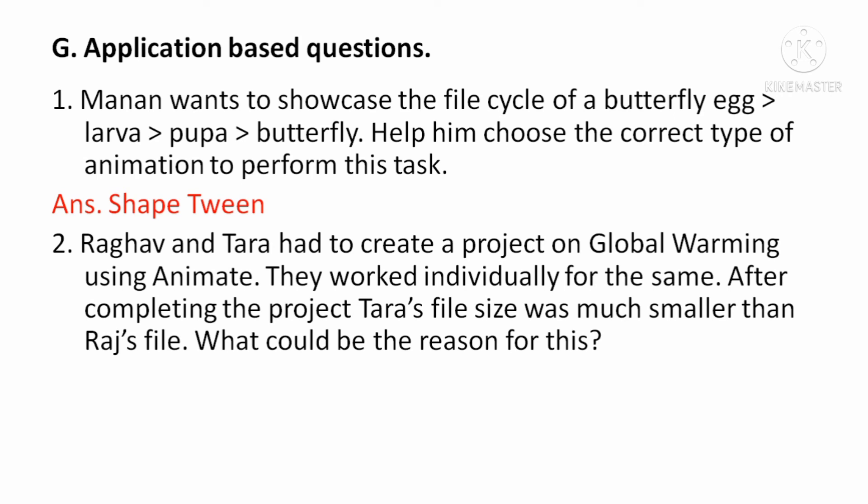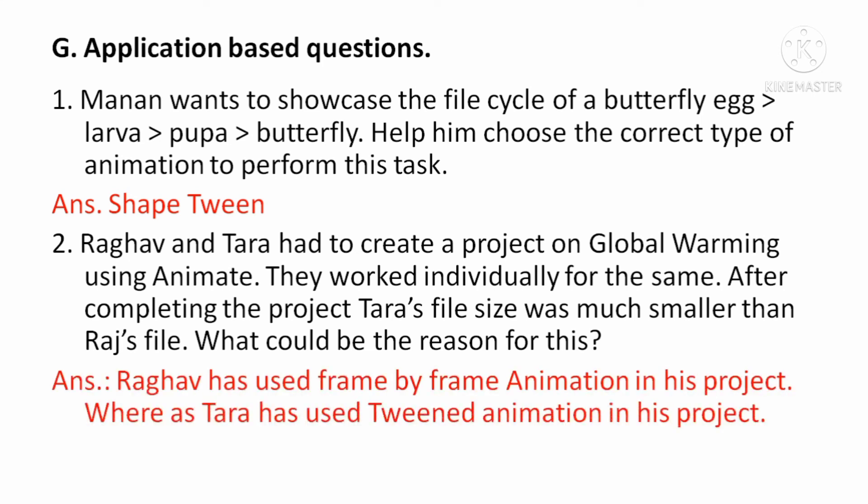राघव और तारा had to create a project on global warming using Animate. They worked individually. After completing the project, तारा की file size राघव की file से काफी छोटी थी. इसका reason है कि राघव has used frame by frame animation in his project — इसलिए उसकी file size बड़ी है, और तारा ने tweened animation का use किया है — इसलिए उसकी file size छोटी है.